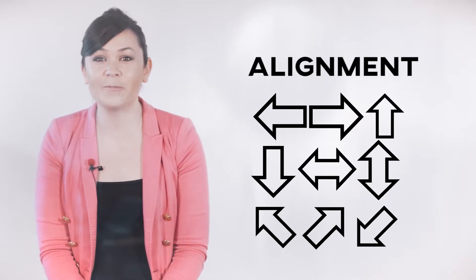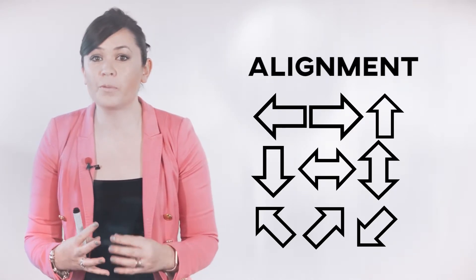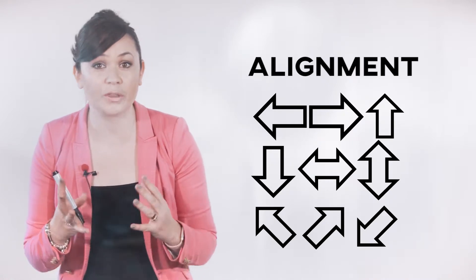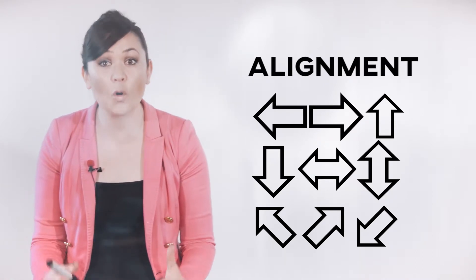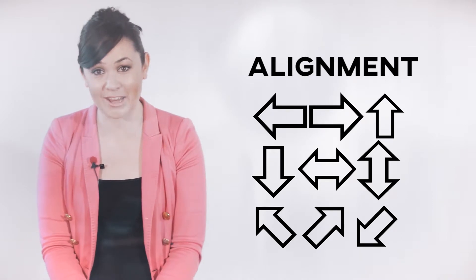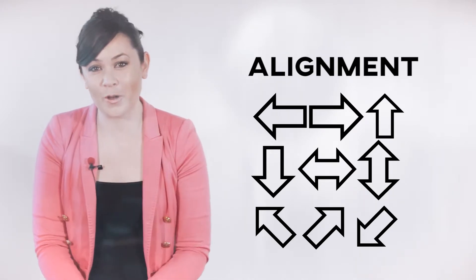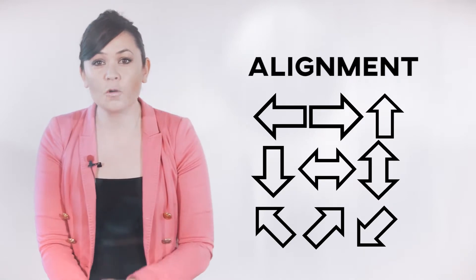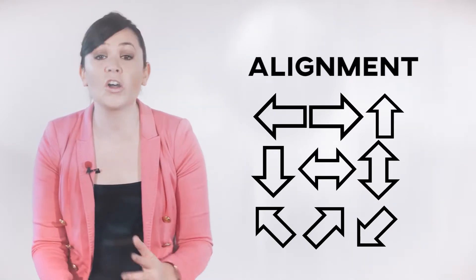We commonly find that alignment issues are truly the root problem that reviewers often mislabel as editing issues during the dissertation prospectus, concept paper, or proposal stage. So before you focus your efforts on APA editing needlessly, let's talk first about how to achieve alignment in your study, starting with what alignment means.